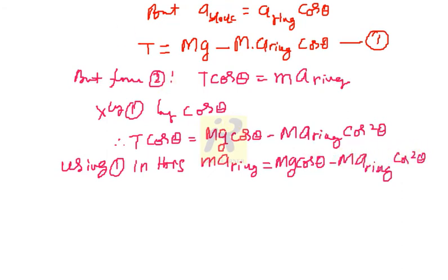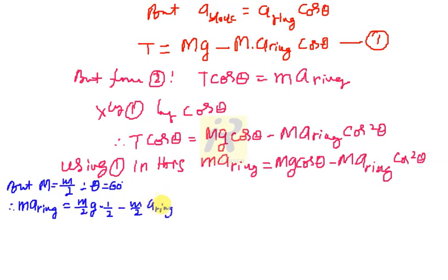Now, what actually we are having? We are having this condition, m capital is m divided by 2. So, therefore, what I can do here, I can simply say that m a ring is equal to m divided by 2 g, theta is 60 degree. So, cos 60 is half minus m divided by 2 a ring into cos square. Cos 60 is half and its square is 1 by 4. So, I cancel the letter m on every side.